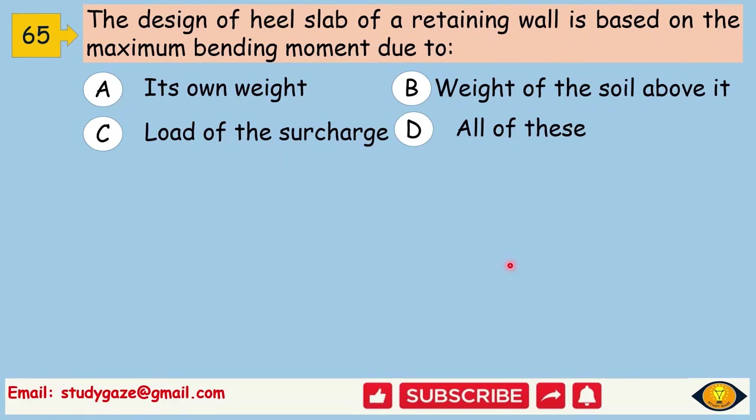The design of heel slab of a retaining wall is based on the maximum bending moment due to all of these. So, the design of heel slab of a retaining wall is based on the maximum bending moment due to its own weight, weight of the soil above it, load of the surcharge. So it should be the combination of all these three loads we design the heel slab of a retaining wall.